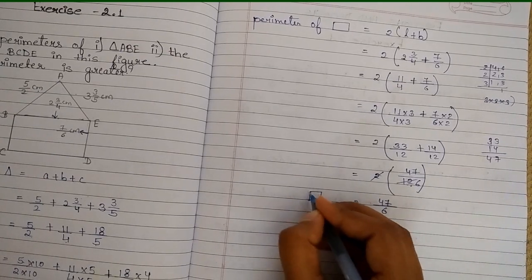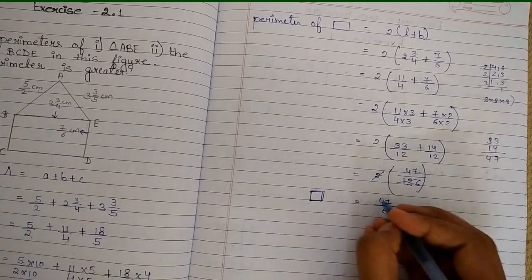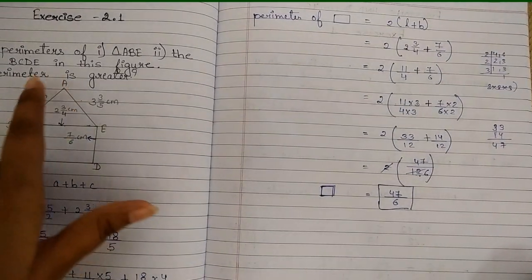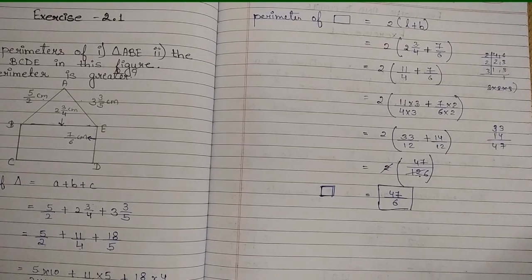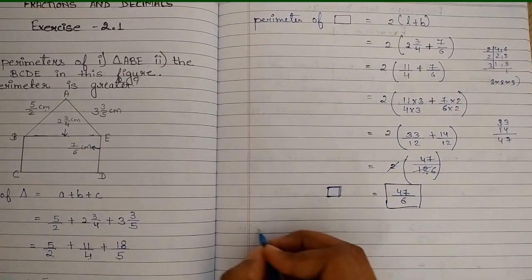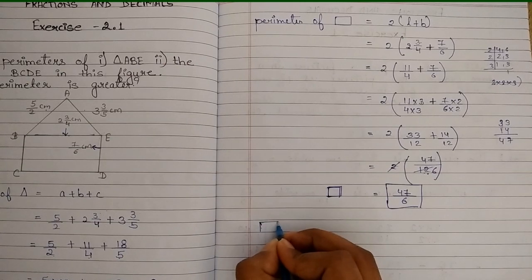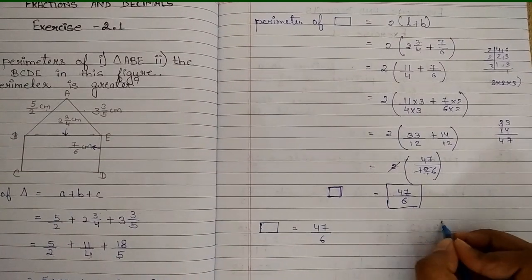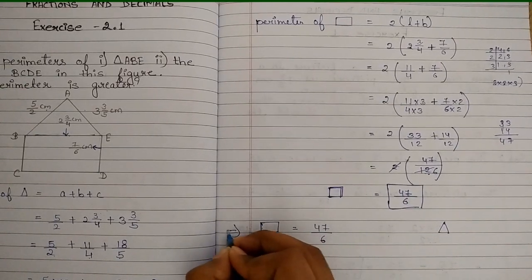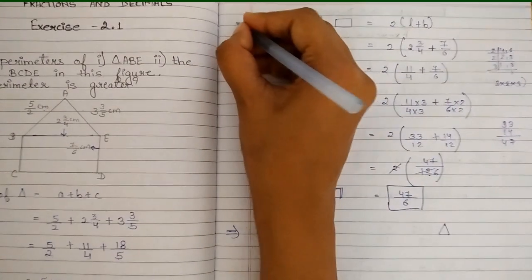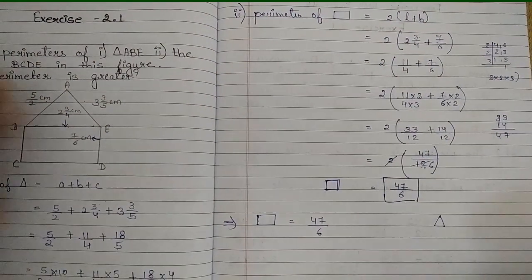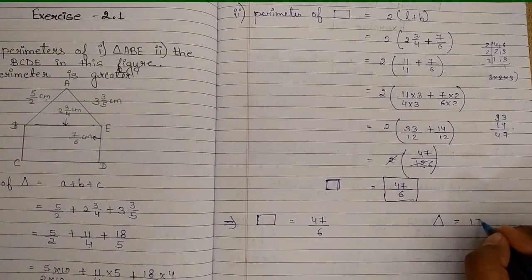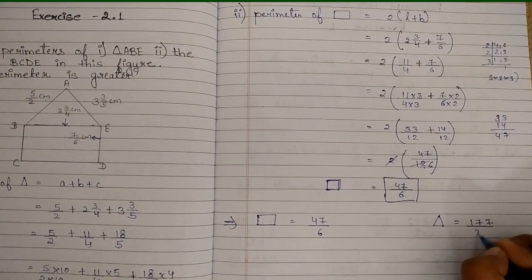Now for the third question: which perimeter is greater? The rectangle perimeter is 47/6 and the triangle perimeter is 177/20. We need to compare these two fractions, so we again take LCM of the denominators 6 and 20.